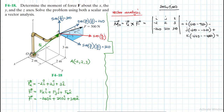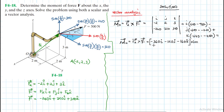Working it all out, the moment M equals rA cross F is equal to minus 360i minus 120j minus 160k, with units of newton meters. So having found the vector analysis result, let's now go to the scalar analysis.